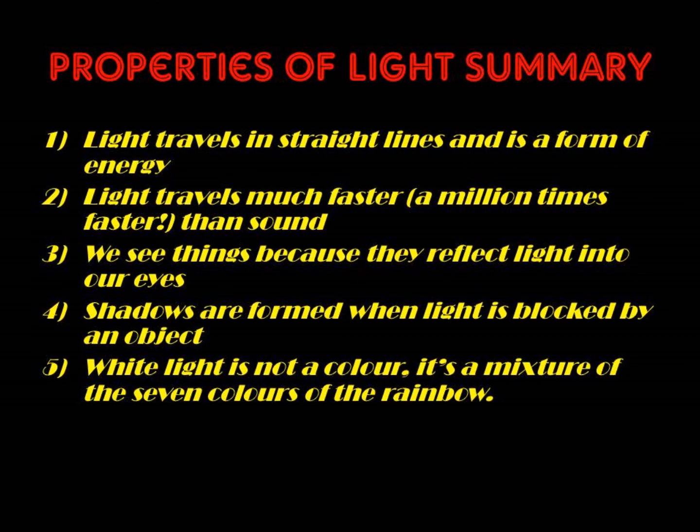Let's see a summary of the properties of light. Property number one: light travels in straight lines. Property number two: light travels much faster than sound — very, very fast. Property number three: we see things because they reflect light into our eyes. Property number four: shadows are formed when the light is blocked by an object. Finally, white light is not a color — it's a mixture of the seven colors of the rainbow.